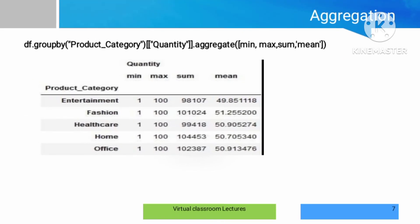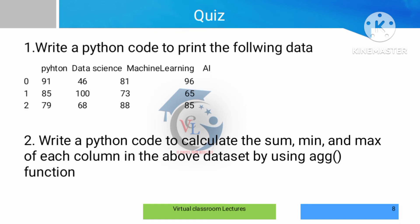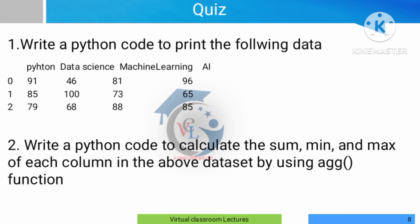Now you can use GroupBy functions and aggregation functions together. It is time for a quiz. The first question: write a Python code to print the following data using a DataFrame and insert values. The second question: write a Python code to calculate aggregation functions — sum, minimum, and maximum values — over a column with scores, using the aggregate function.